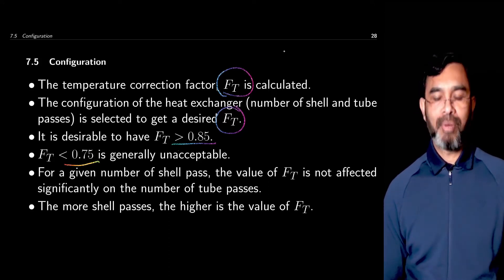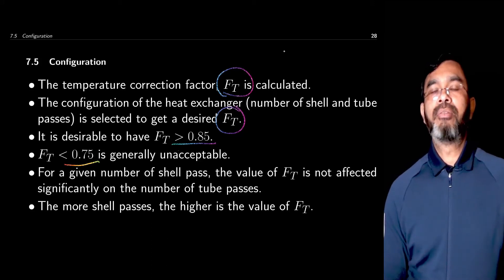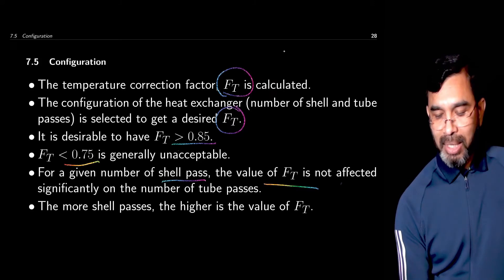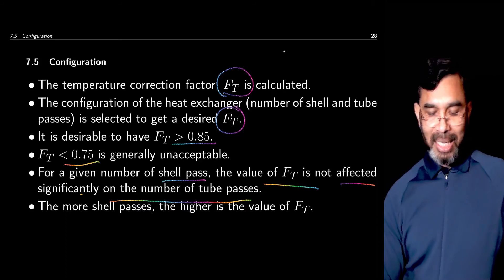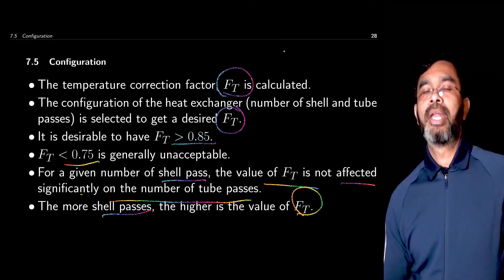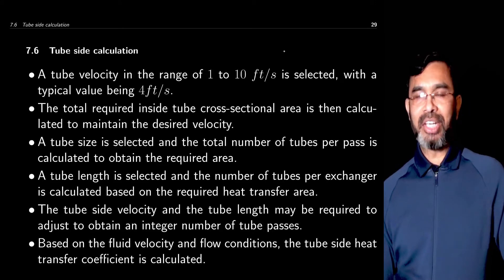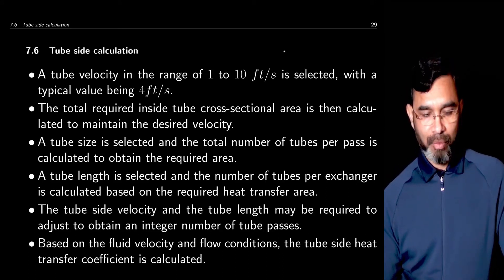If the correction factor is low — less than 0.75 — then we need to choose a different configuration. For a given number of shell passes, the value of FT is not significantly affected by the number of tube passes. So the value of FT depends primarily on the number of shell passes. If the FT value is very low, we may need to choose a higher number of shell passes. Once the configuration is chosen, we need to estimate the individual heat transfer coefficients — the tube side and the shell side heat transfer coefficients.